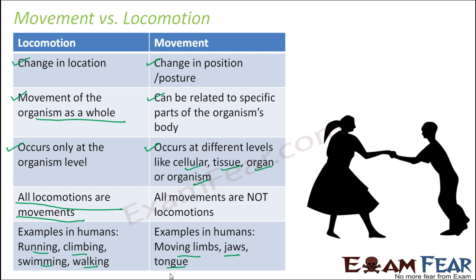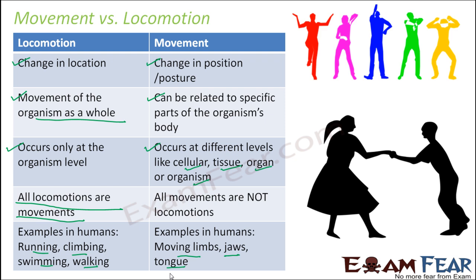Let us look at an example. In this picture, two persons are dancing. When they are dancing, whether is it movement or locomotion? If they are moving from one place to another while dancing, that would be locomotion. But if each individual is standing at one point and just making movements with their hands and feet, they are not moving from one place to another — so that is just movement. It would be locomotion only if they are moving from their positions. I think with this discussion, the difference between movement and locomotion is clear.